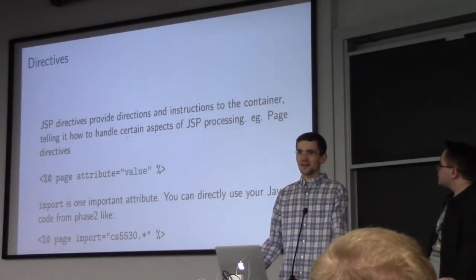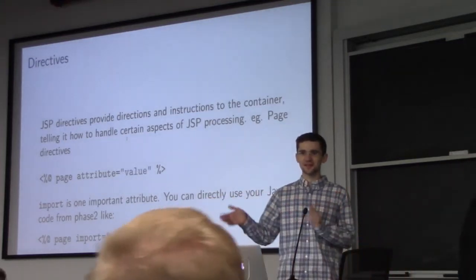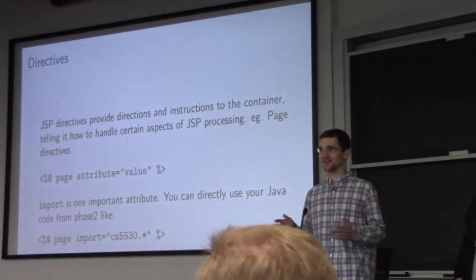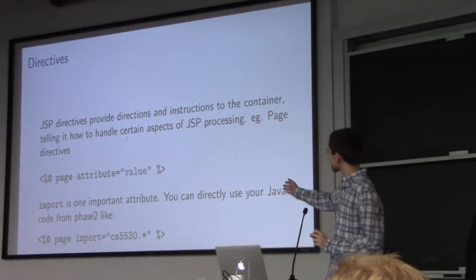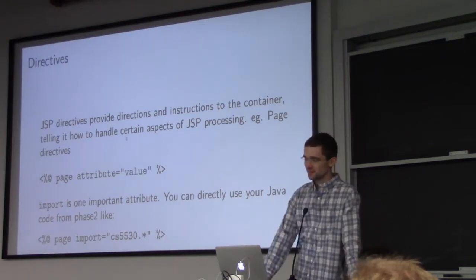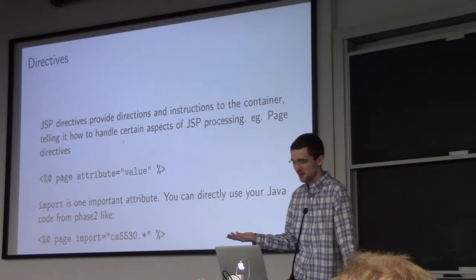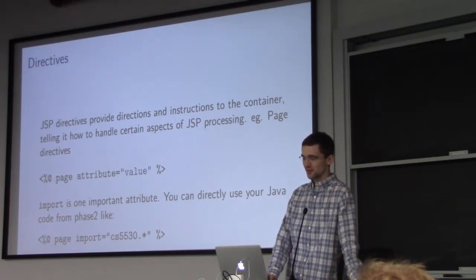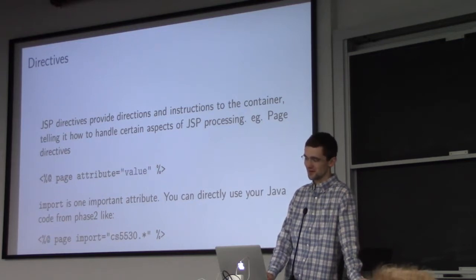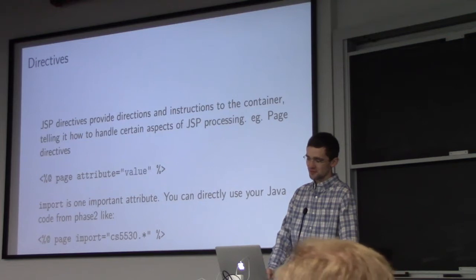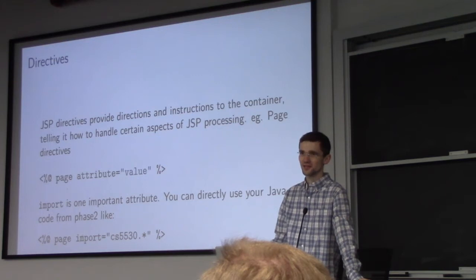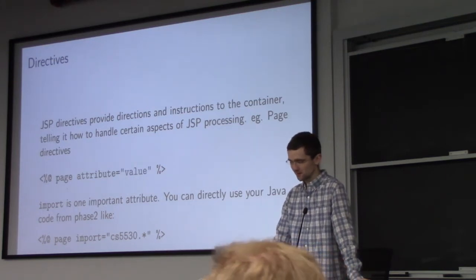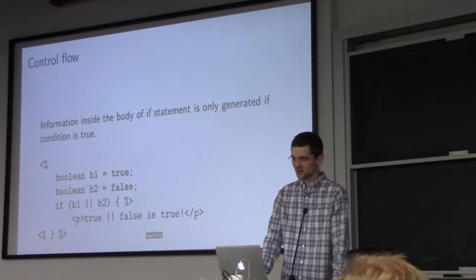Like Ray said, JSP is kind of like HTML and Java having a really ugly baby. To start off, at the very top of your JSP — which is pretty much like an HTML page — you put in this little magic string here, which is a page directive attribute. This can be used to import your existing code from phase two so that you don't have to rewrite everything. And that's how you start it off.